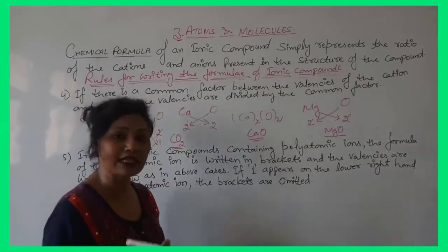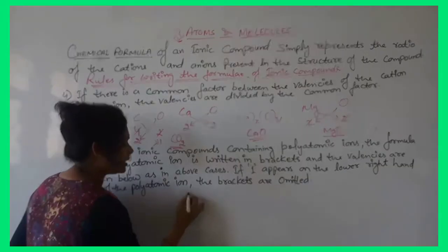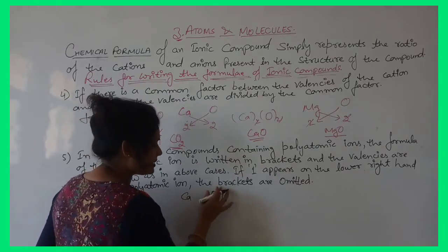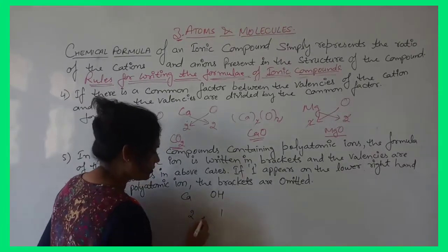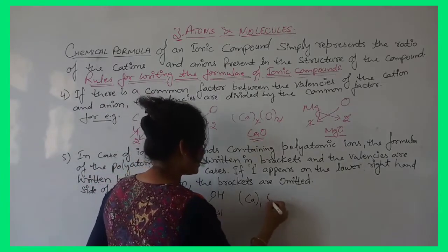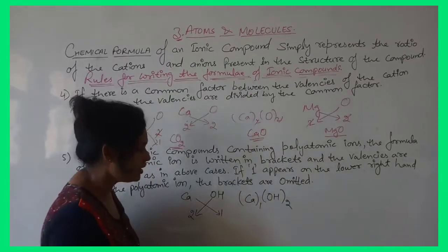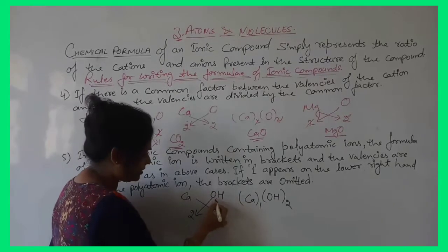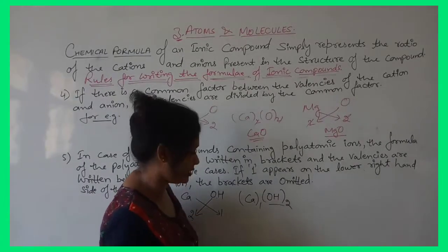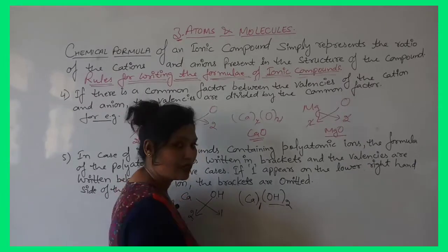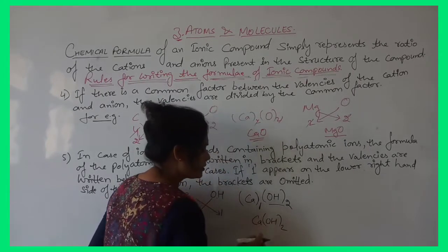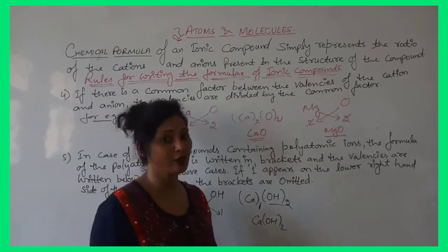For example, calcium hydroxide: Ca²⁺ has valency 2 and OH⁻ is a polyatomic ion with valency 1. Cross-over the valencies: Ca gets subscript 1 and OH gets subscript 2. Since the right-hand side subscript is 2 (not 1), the bracket remains. The final formula is Ca(OH)₂.